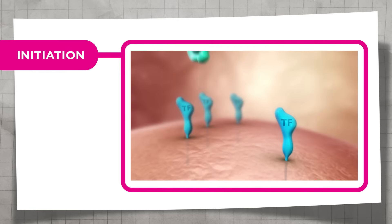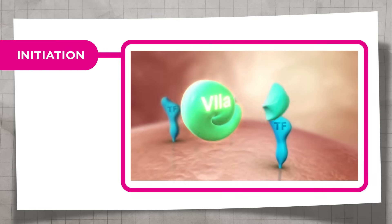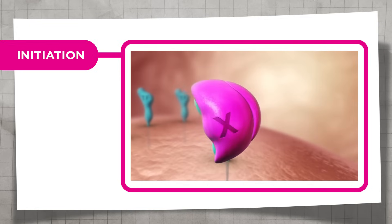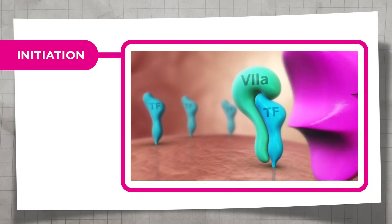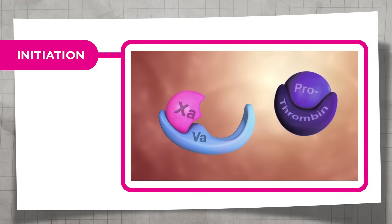Vascular injury causes tissue factor on the outside of cells in the vessel wall to come into contact with factor 7a and factor 10a in the blood, leading to the production of a small amount of thrombin.